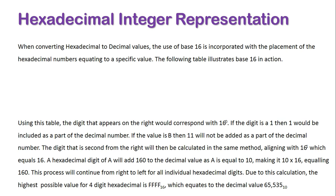When converting hexadecimal to decimal values, the use of base 16 is incorporated with the placement of the hexadecimal numbers equivalent to a specific values. The following table illustrates this base 16 in action.